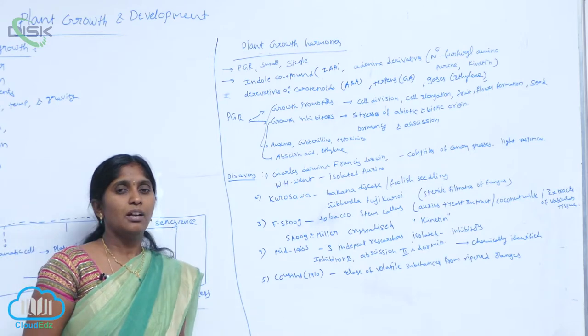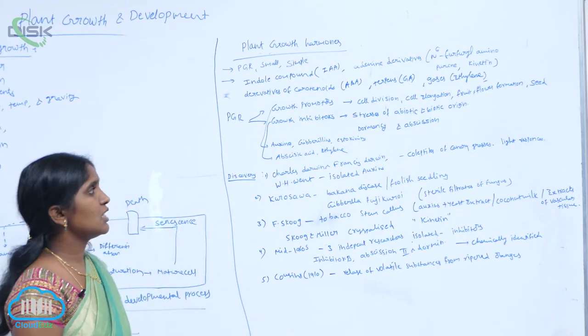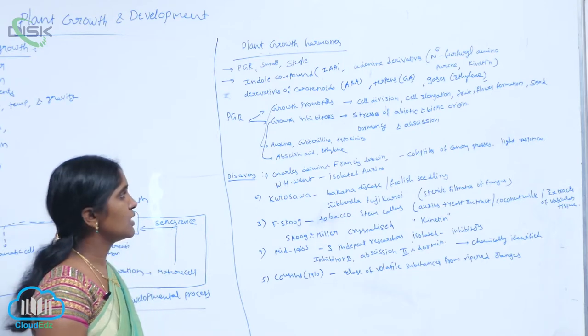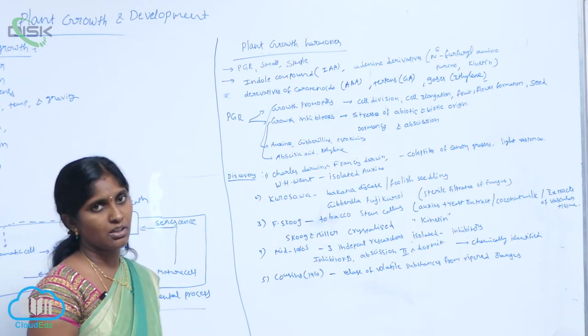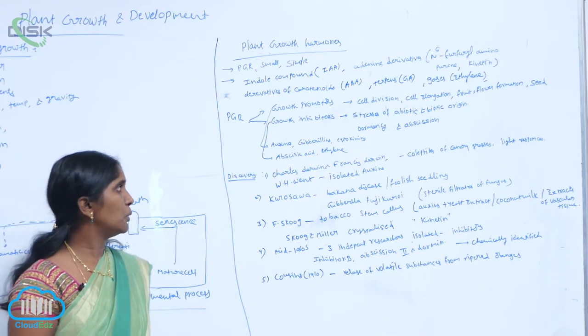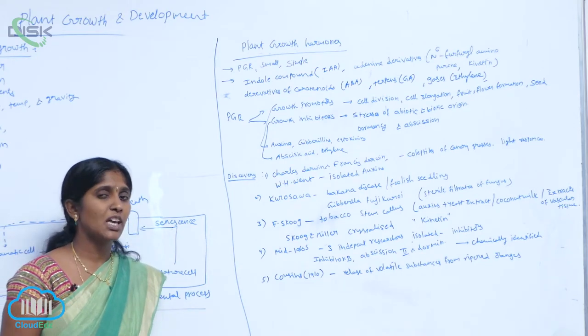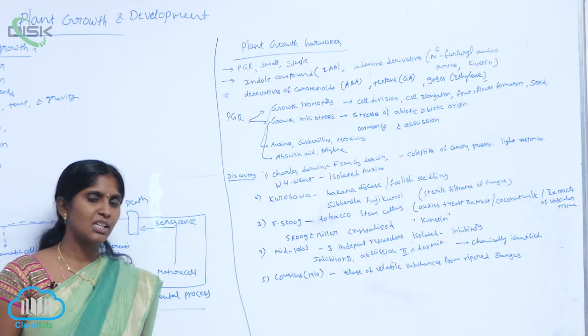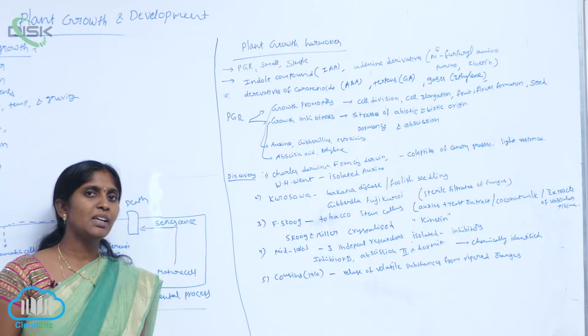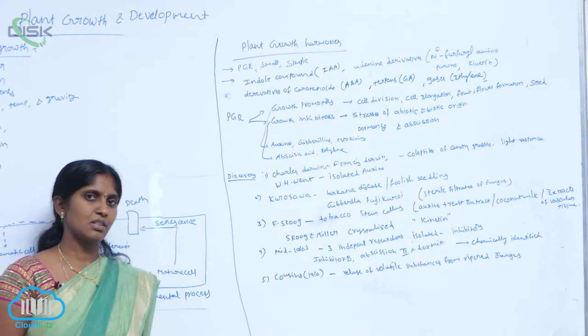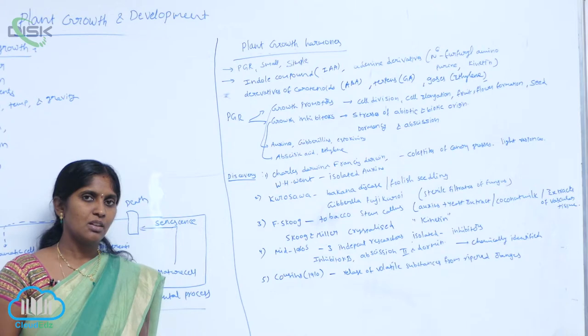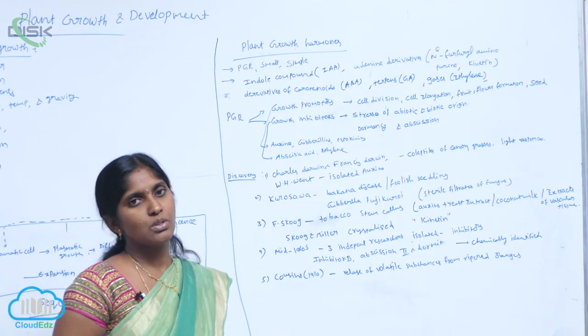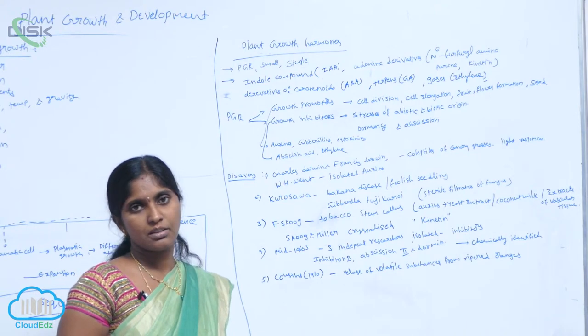Stress of abiotic, biotic origin. They come from stresses of abiotic and biotic origin. For example, take abscisic acid. When the concentration of abscisic acid is increasing, it means the plant is in condition of stress. To avoid stress, the plant can close the stomata in the presence of ABA concentration.